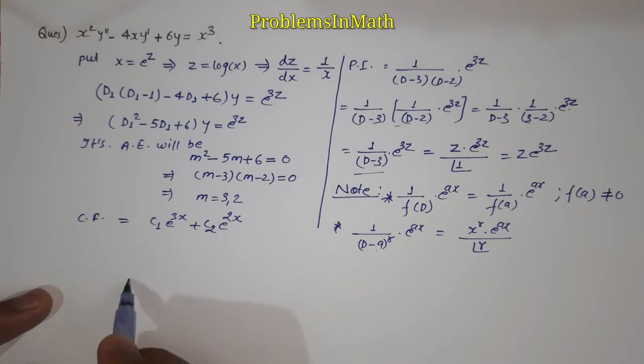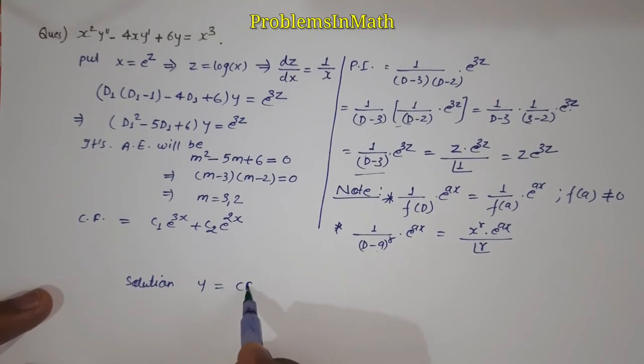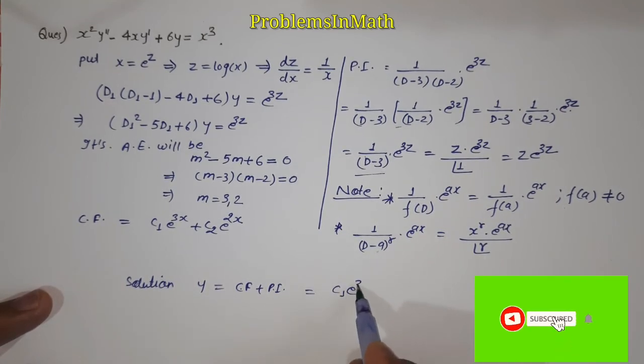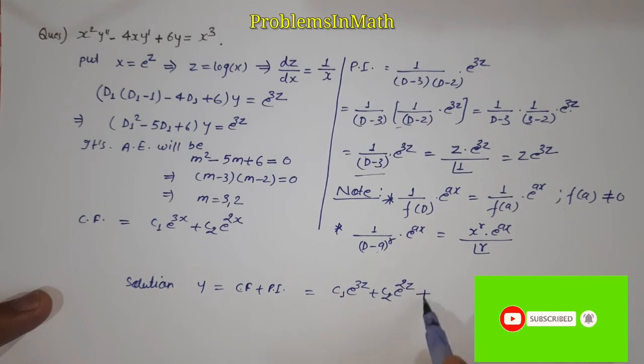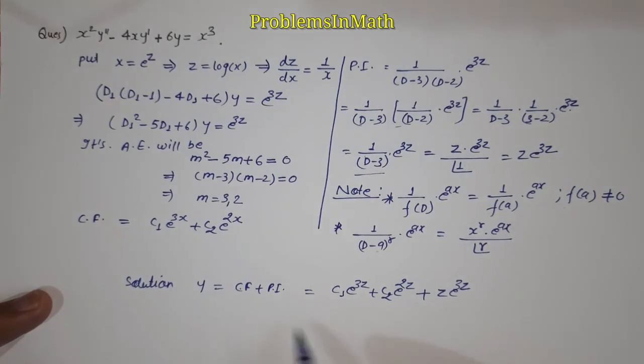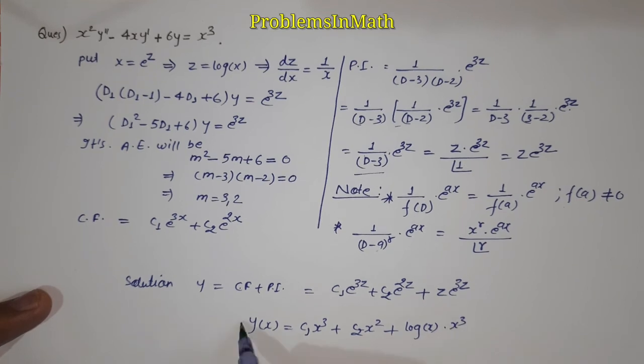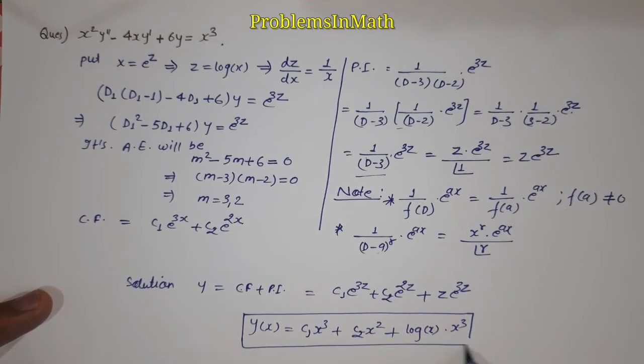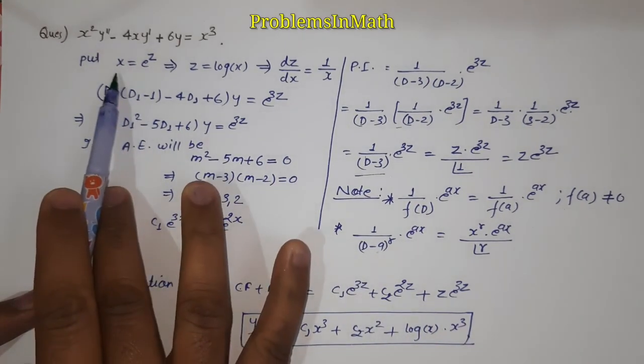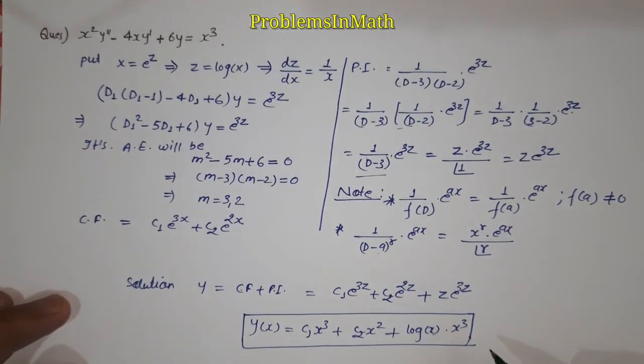Now the solution will be y equal to cf plus pi, which is c1 e to power 3z plus c2 e to power 2z plus z e to power 3z. But wait, our question is given in the form of x and y, so we cannot leave it here. The final answer is y equal to c1 x cube plus c2 x square plus log x times x cube.